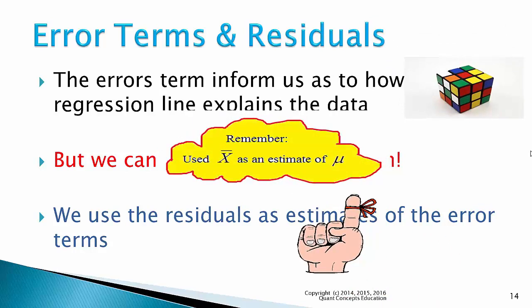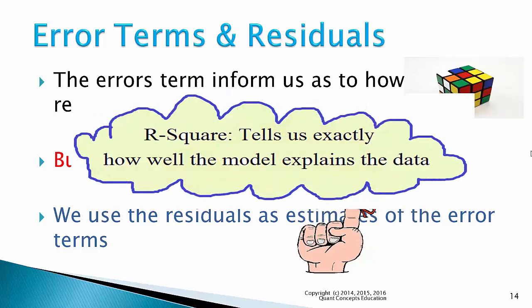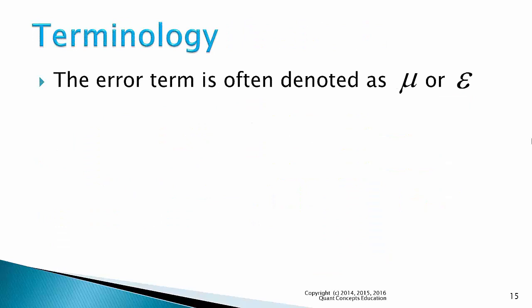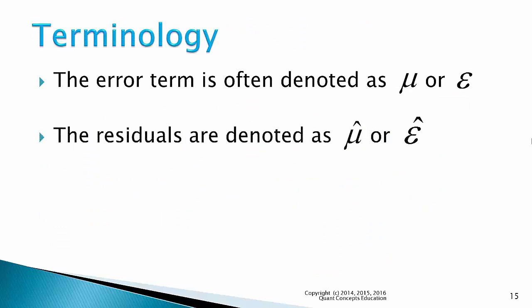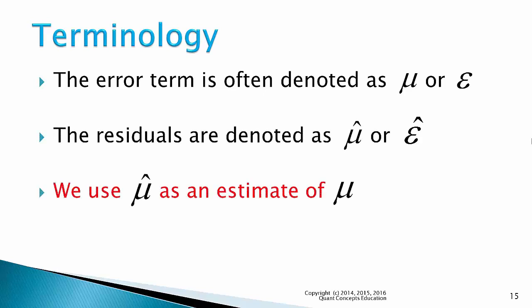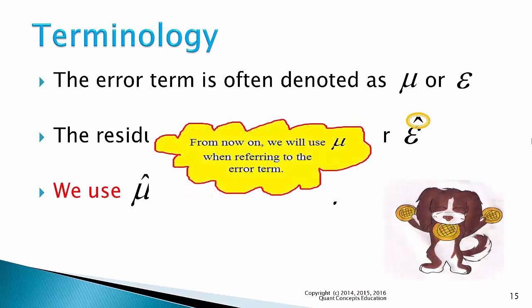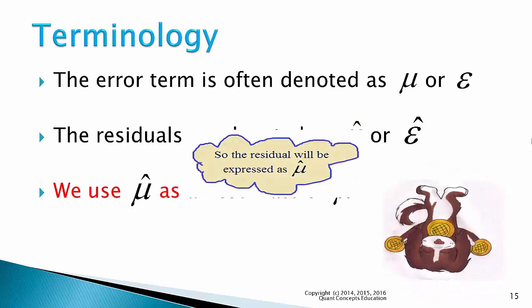Later in this lecture, I'll introduce a measure called the R-squared statistic. This uses the residuals of the sample regression model and tells us exactly how well the model explains the data. The error term is often denoted as mu or epsilon, and the residuals are denoted as mu hat or epsilon hat. In our lectures we will use mu, so mu hat is an estimate of mu. The hats mean that these are the sample estimates.